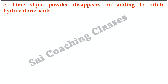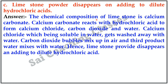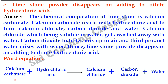C. Limestone powder disappears on adding to dilute hydrochloric acid. Answer: The chemical composition of limestone is calcium carbonate. Calcium carbonate reacts with hydrochloric acid to form calcium chloride, carbon dioxide, and water. Calcium chloride, being soluble in water, gets washed away; carbon dioxide bubbles mix into air, and water mixes with water. Hence, limestone powder disappears. Word equation: Calcium carbonate + Hydrochloric acid → Calcium chloride + Carbon dioxide + Water.